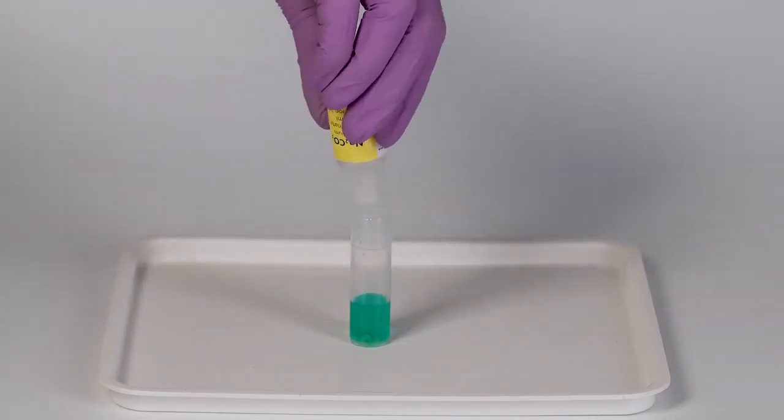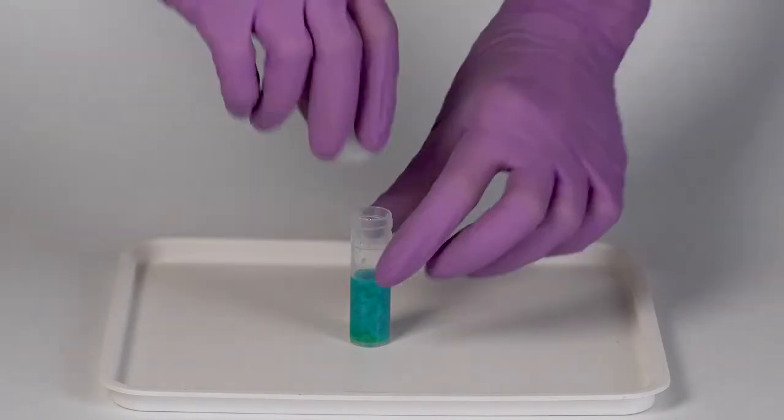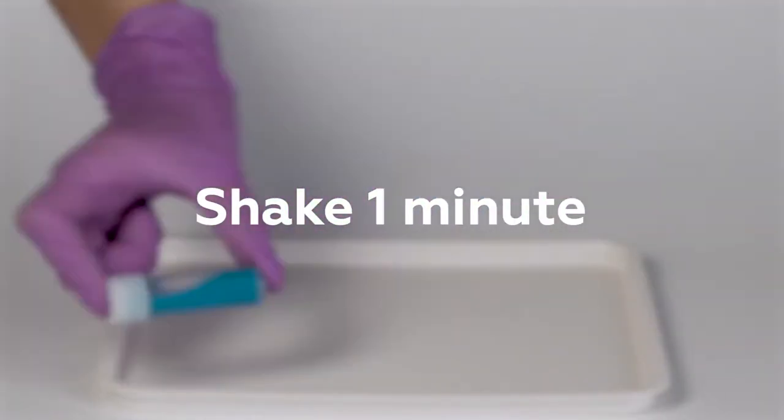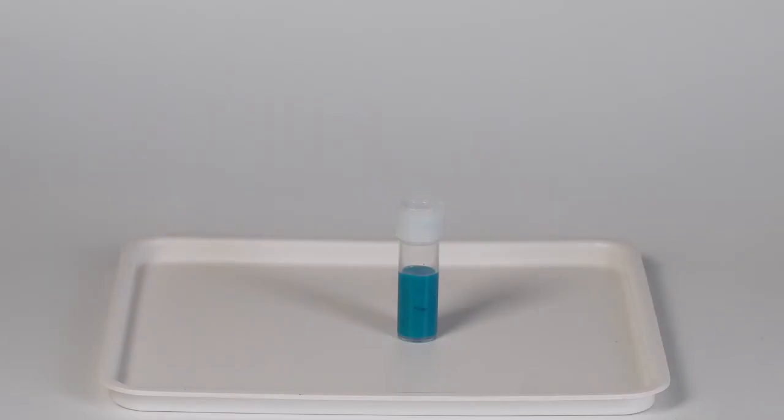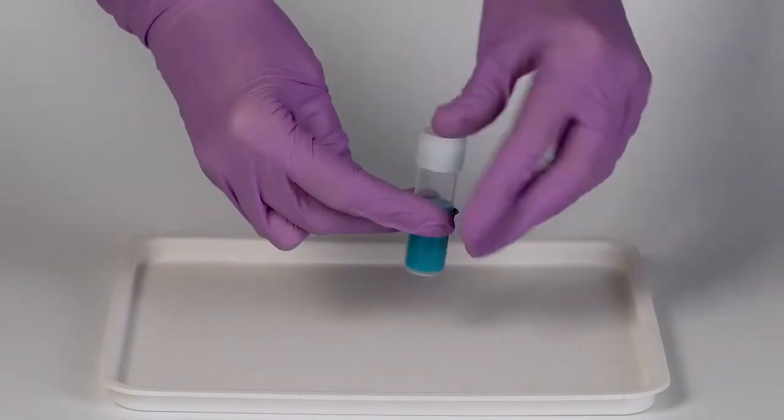Pour one bottle of sodium carbonate solution into the vial. Close the vial and shake vigorously for one minute. The reaction produces a turquoise precipitate, copper carbonate hydroxide, or malachite.